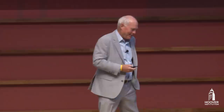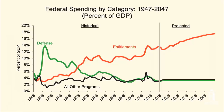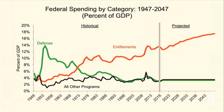Republicans are always grumbling about higher spending, and then they go along and vote for it. The chart — excluding interest payments on the debt — shows that all of the growth in government spending over the last seven decades has been in these open-ended entitlement programs. Entitlements are now about two-thirds of total program spending excluding interest on the debt.